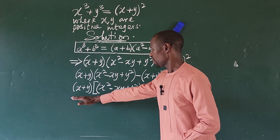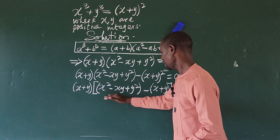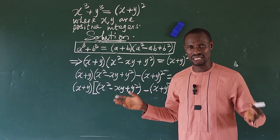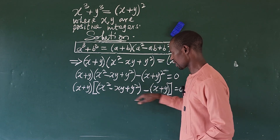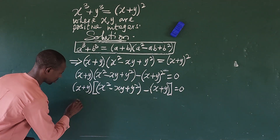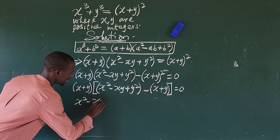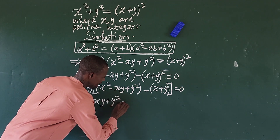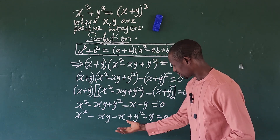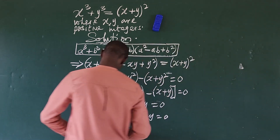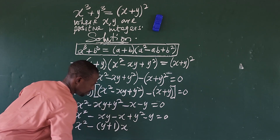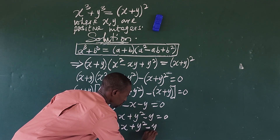Factoring x plus y out gives us x plus y times bracket x squared minus xy plus y squared minus bracket x plus y close bracket equal to 0. Applying the zero product rule, either x plus y equals 0 or the second factor equals 0. For case 1, x plus y equals 0 gives no positive integer solutions, so we ignore it. For case 2, expanding the second factor gives: x squared minus xy plus y squared minus x minus y equals 0.